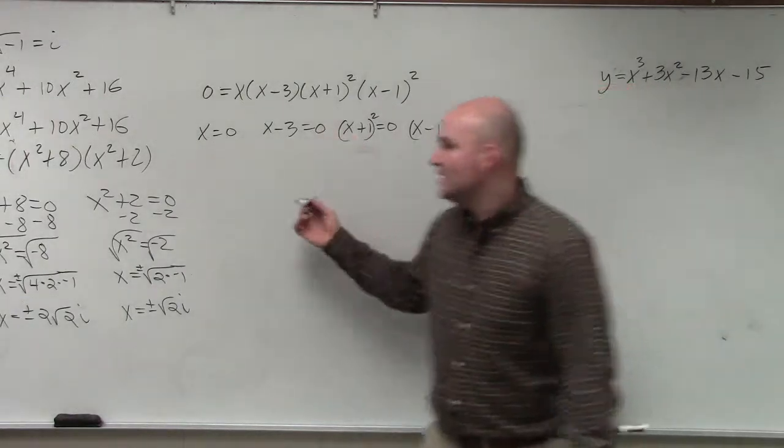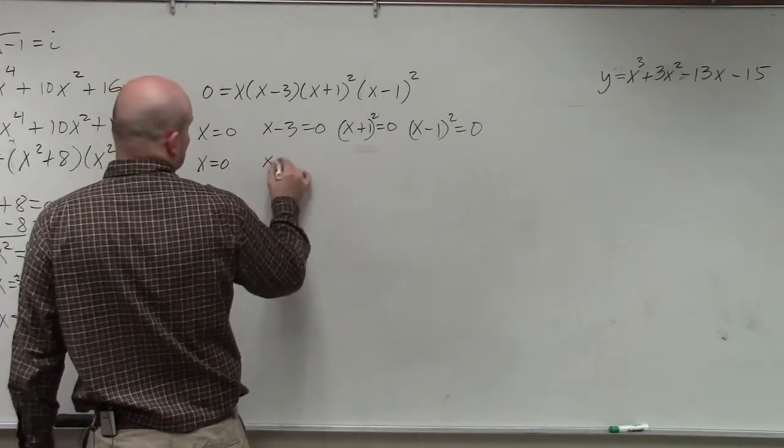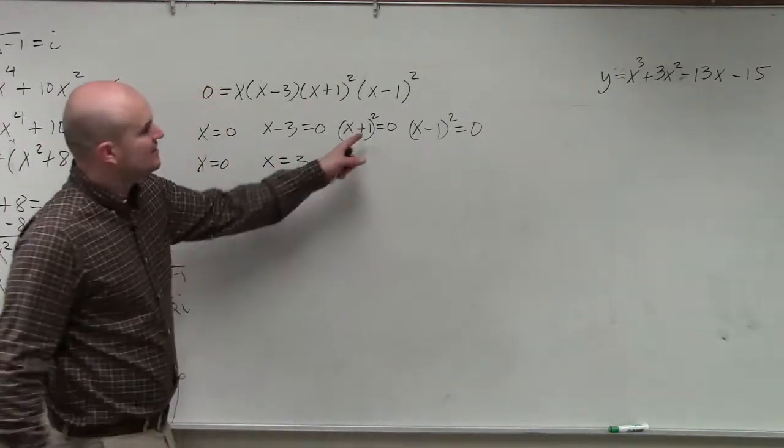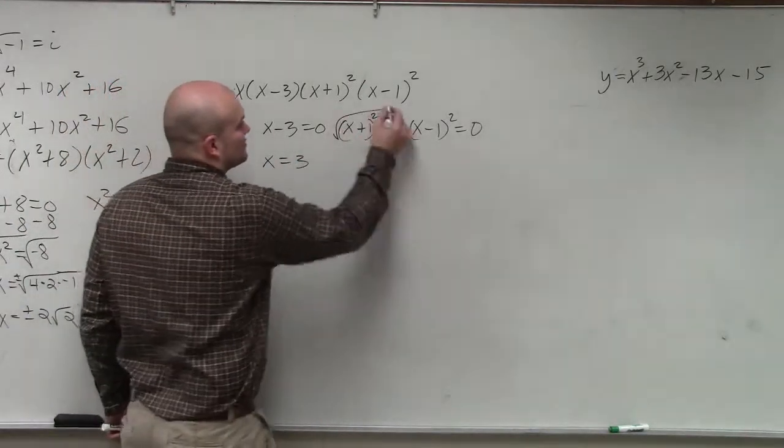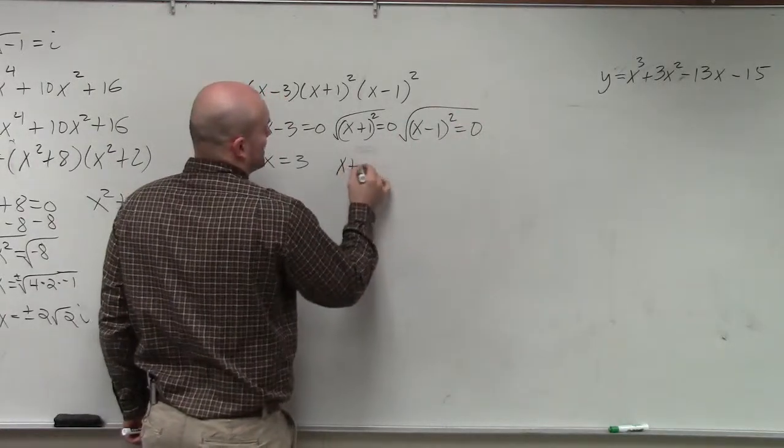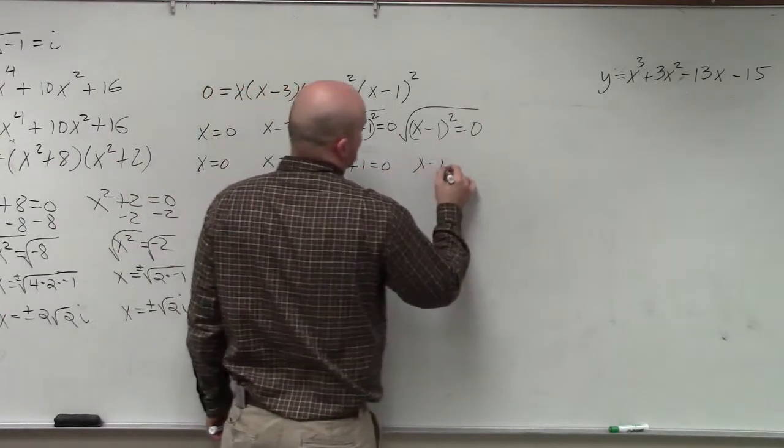Now, we already know x equals 0. That one's easy. This, x equals 3. Now, to get rid of the square, I need to take the square root. And I'm just left with x plus 1 equals 0, and x minus 1 equals 0.